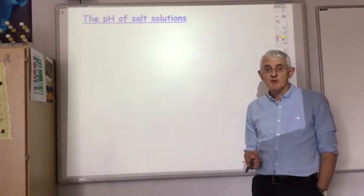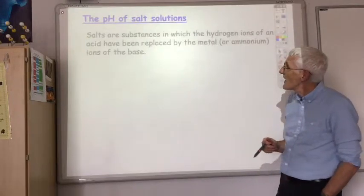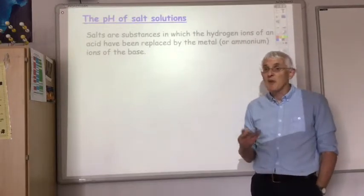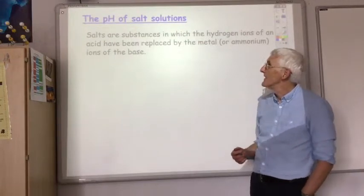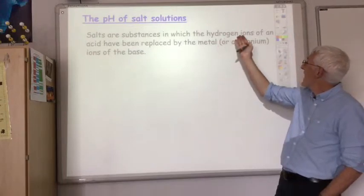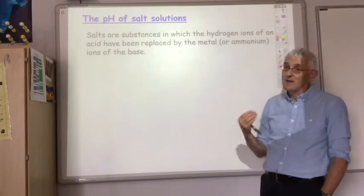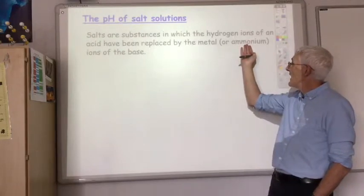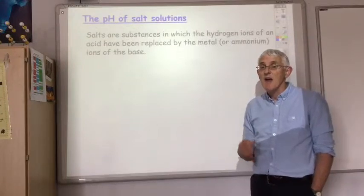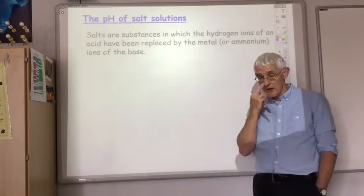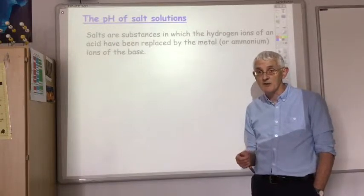The first question to remind ourselves about is: what is a salt? A salt is one of the substances that is produced when you neutralise an acid. The salt is a substance in which the hydrogen ion of the acid has been replaced by the metal ion of the base, or perhaps by the ammonium ion of the base. Now if the salt is soluble in water — they aren't all — but if it is soluble in water, it may affect the pH of the water solution.